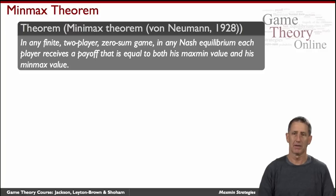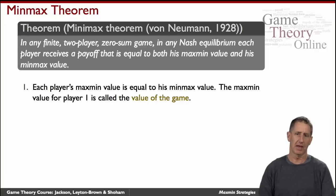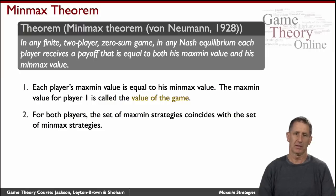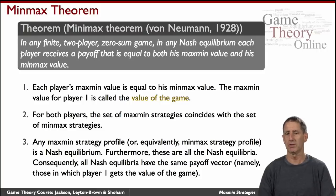And so in the setting of zero-sum games, maxmin and minmax strategy make a lot of sense. And in fact, in a very famous theorem due to John von Neumann, it was proved that in a zero-sum game, by definition we consider only two-player such games, any Nash equilibrium, the player receives a payoff that is equal to both his maxmin value and his minmax value. And that means that, so we'll call it the value of the game, the value for player one is called the value of the game. And that means that the set of maxmin strategies are really the same as set of the minmax strategies. That is, trying to improve your worst-case situation is the same as trying to minimize the other guy's best-case situation.